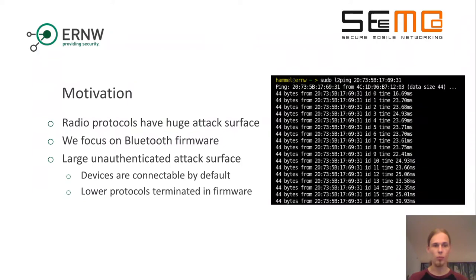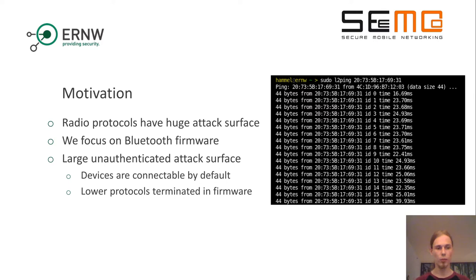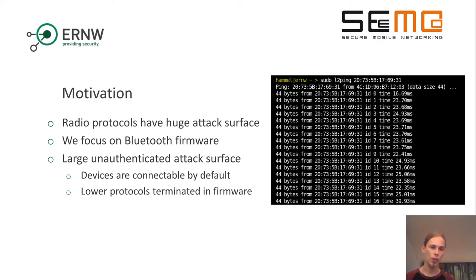First of all, why do we want to have a look at radio protocols? By their nature, they are a huge attack surface, as any nearby person can try to interact with them. In this research, we mainly focus on Bluetooth firmware, because Bluetooth is a very common radio protocol implemented in most mobile phones nowadays. As soon as you have Bluetooth enabled on your device, any nearby person can connect to you by just knowing your Bluetooth address. In addition, there are some lower-layer protocols that are even terminated in the firmware and normally hidden to the user.